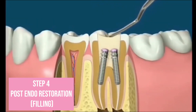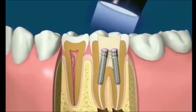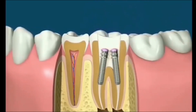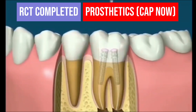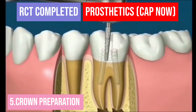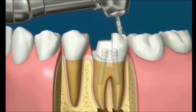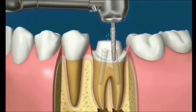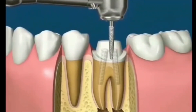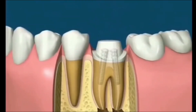At this point the tooth is still in a weakened state and can break with heavy biting. The best treatment usually involves preparing the tooth and covering it with a full crown, sometimes called a cap.